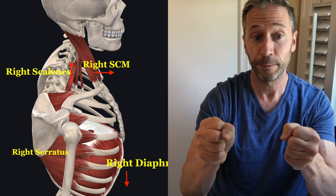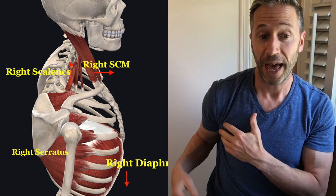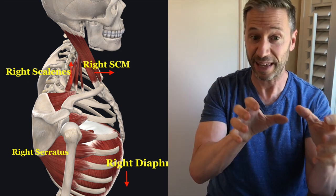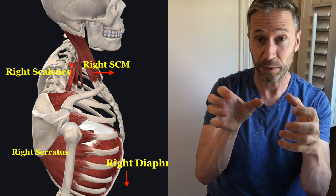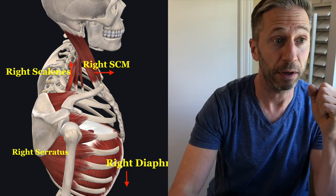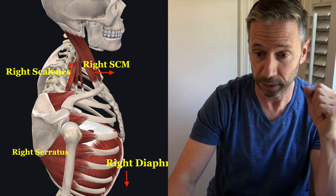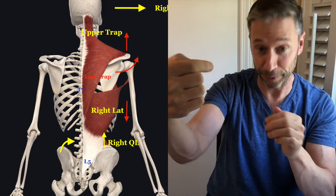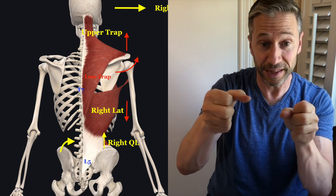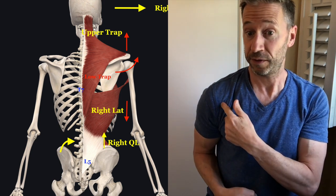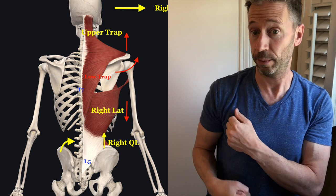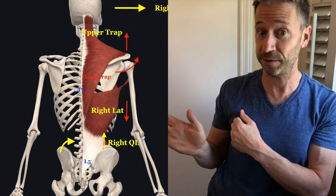The right low trap along with the right tricep has to stabilize that right scapula back into proper position. To bring that arrow the opposite direction, you need that low trap to bring this scapula back into external rotation.